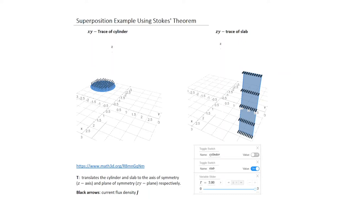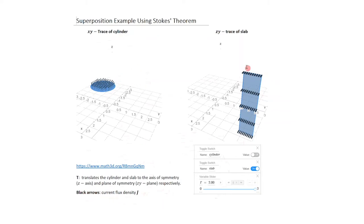This is an xy-trace of the cylinder showing the direction of the current flux density, and a zy-trace of the slab with arrows pointing in the x-hat direction for the slab current flux density. We treat the blue slab and the red cylinder as independent objects. We'll solve for the field for each problem, first aligning each object with the axis of symmetry or symmetry plane along the z-axis. The black arrows represent the current flux density J for the two separate sub-problems.